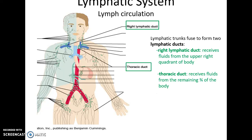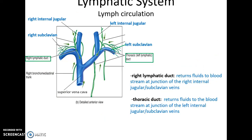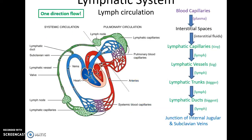Eventually the trunks fuse to form one of the two lymphatic ducts that return the lymph to the bloodstream. There's the right lymphatic duct, which receives fluids from the upper right quadrant of the body, and the thoracic duct, which receives lymph from the remaining three-fourths of the body. The right lymphatic duct empties into the junction between the right internal jugular vein and the right subclavian vein. The thoracic duct returns its fluids into the junction between the left internal jugular vein and the left subclavian vein.